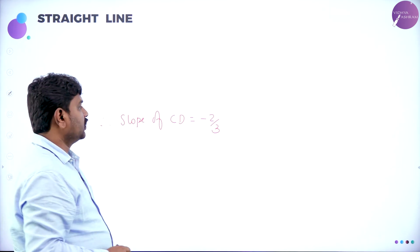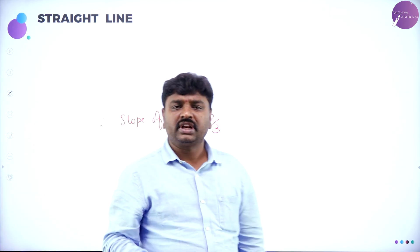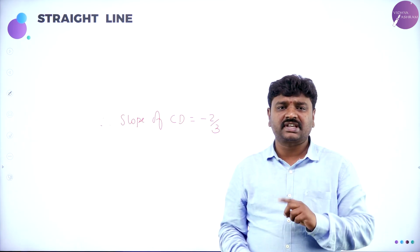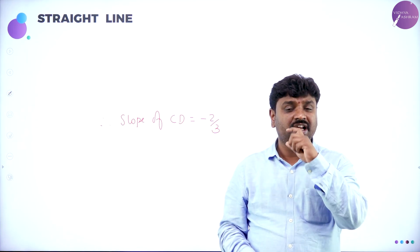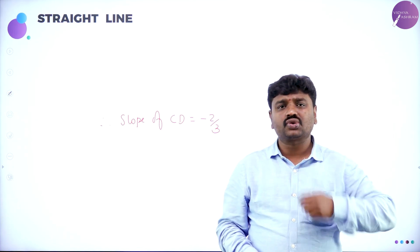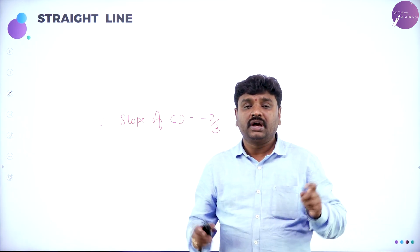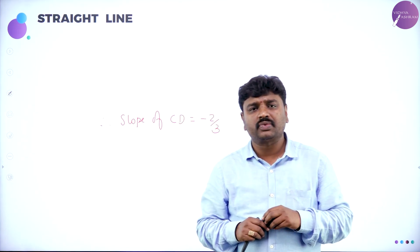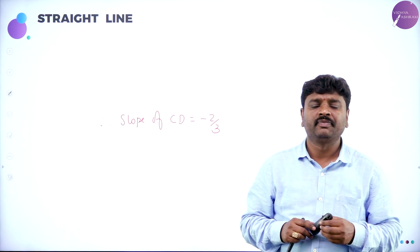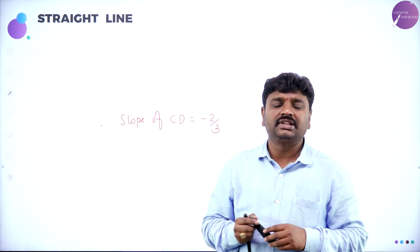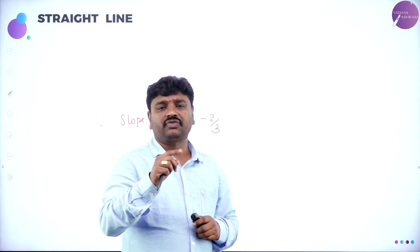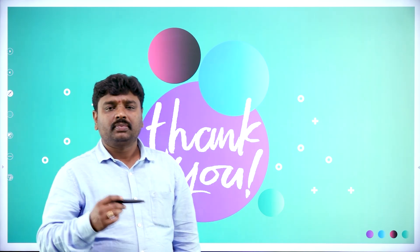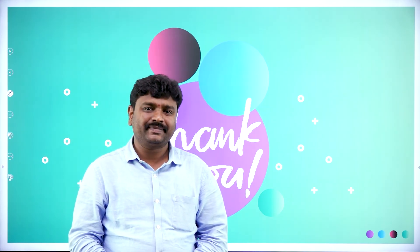I hope all of you got this. Dear students, before going to any problems or forms of straight lines, you should be thorough with slope. M is tan theta; theta is angle made by the line with X-axis, also called inclination. M is slope. If they give endpoints, use M equals Y2 minus Y1 by X2 minus X1. Two conditions: if two lines are parallel, slopes are equal; if two lines are perpendicular, product of slopes is minus 1. If you are thorough with these concepts, the next session will be easier. Please revise them. Thank you.